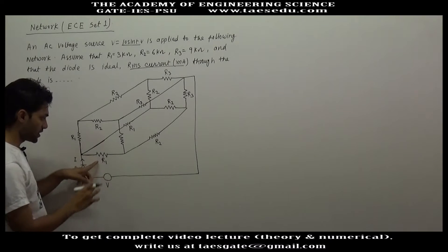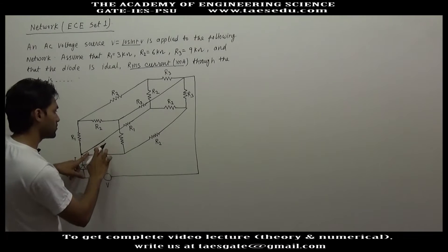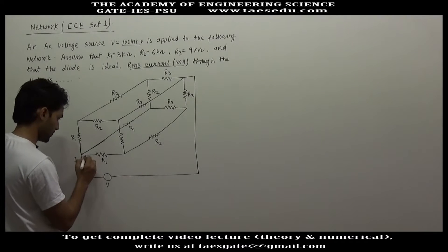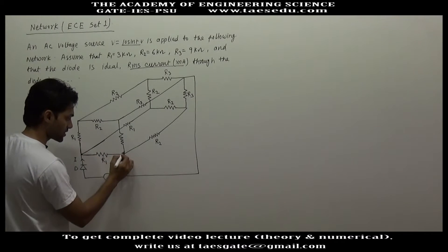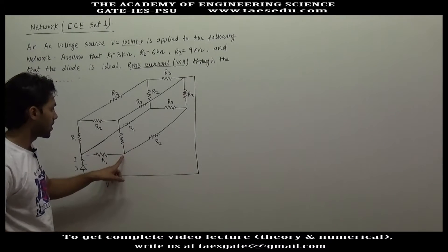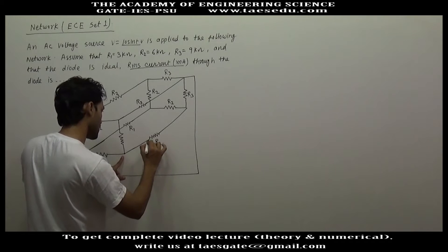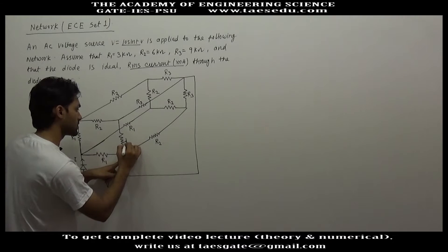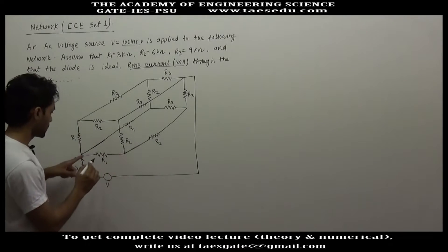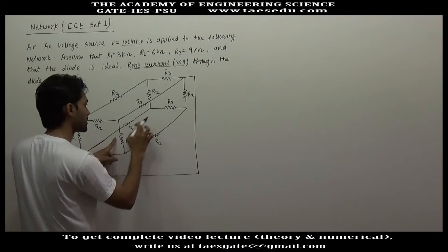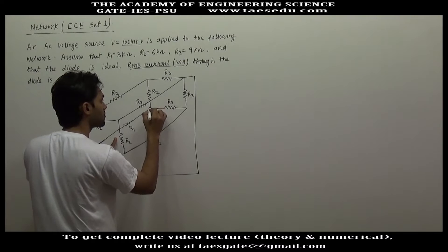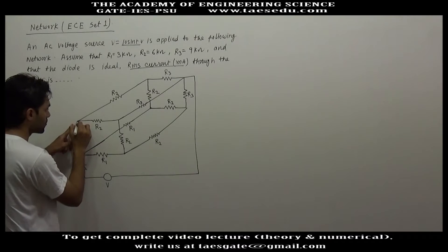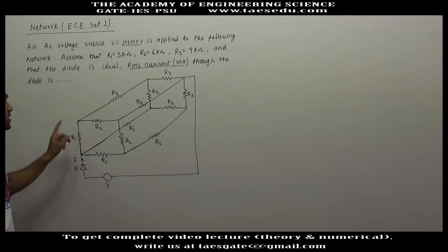In the first branch, you will get resistance R1. In the second branch also, you are getting resistance R1. In the third branch, you are getting resistance R1. In the first branch only, after resistance R1 you will reach at this point; after this point you have resistance R2, and then two branches each with resistance R2. In the second branch, after R1 you have R2 and R2. In the third branch, after R1 you have R2 and R2.